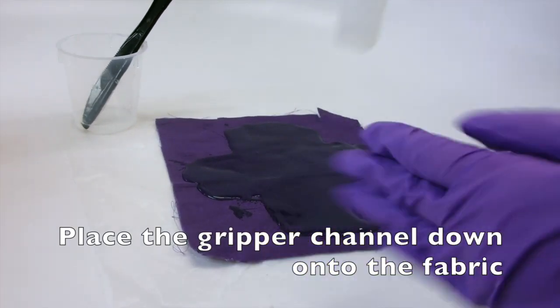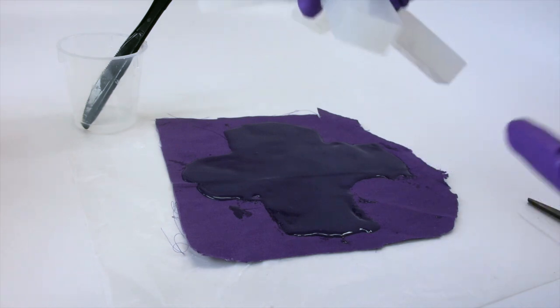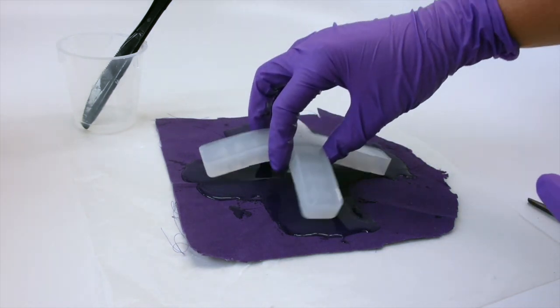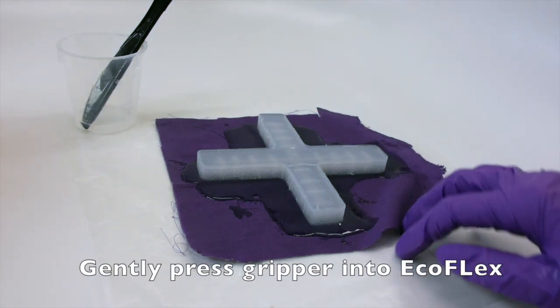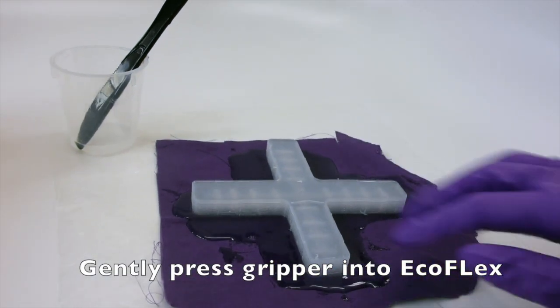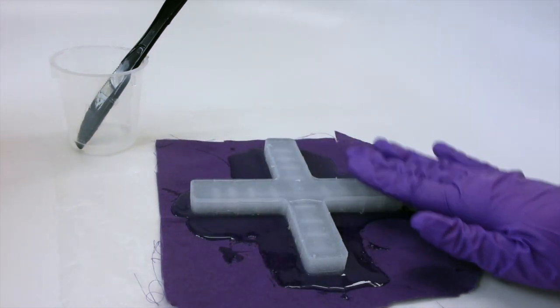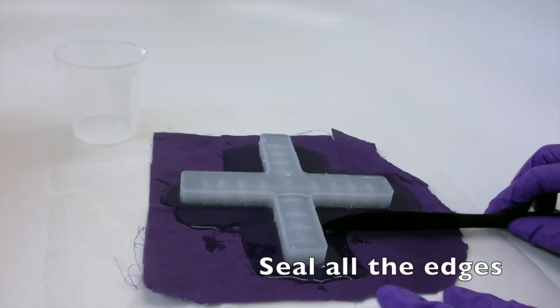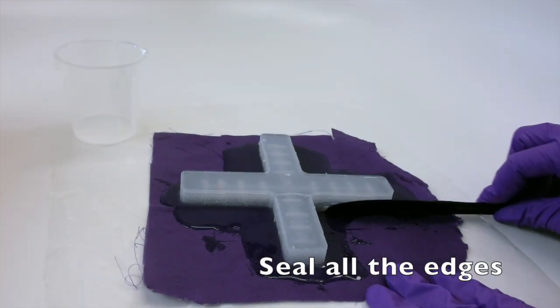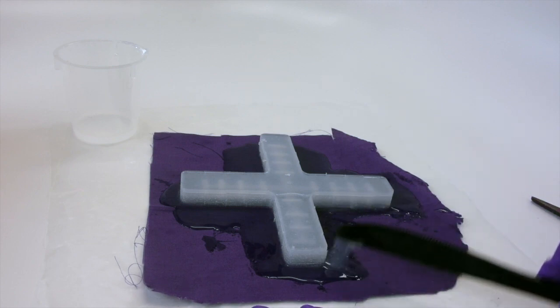Place the gripper channel down onto the fabric. Gently press the edges of the gripper into the EcoFlex. Create a seal of EcoFlex around all sides of the gripper. This will help prevent air from escaping when inflated.